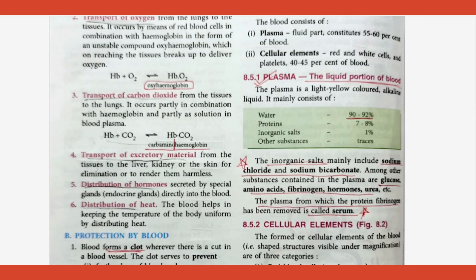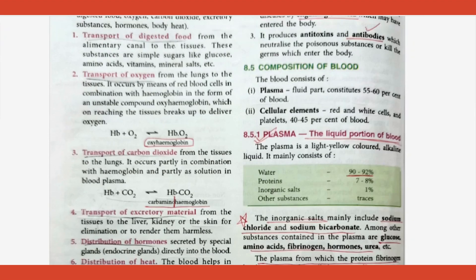Blood components: blood consists of a liquid part and cells. The liquid part is called plasma, in which all the cells are kept. Cells are red blood cells, white blood cells, and platelets. About 55 to 60 percent of blood is liquid plasma.